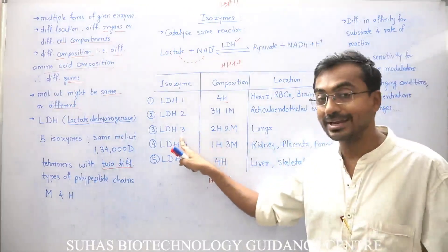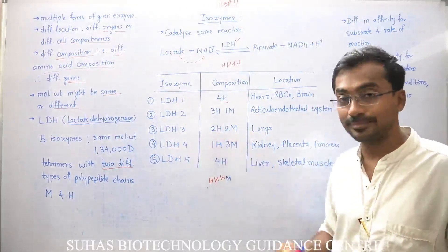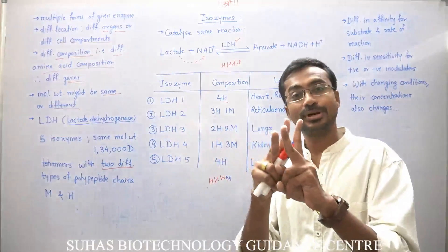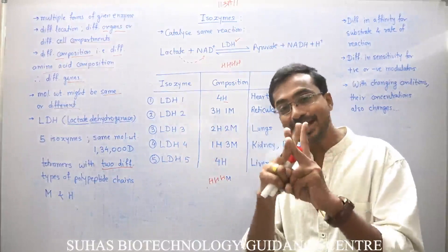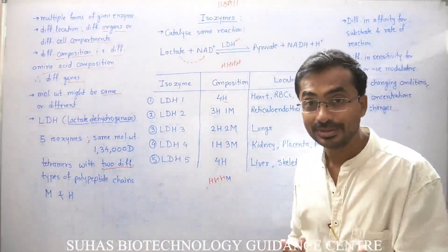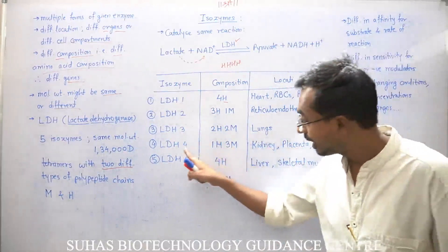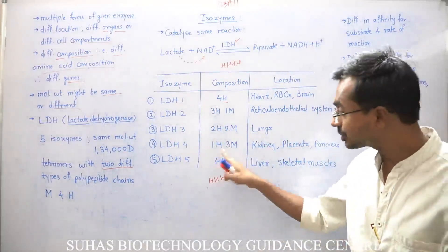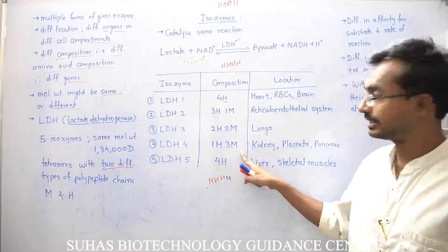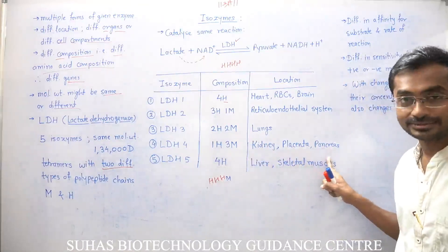LDH3 has composition 2H and 2M, but when this tetramer is formed it again has the same active site, and is found in lungs. LDH4 has composition 1H and 3M, with the same active site, and is found in kidney, placenta, and pancreas.